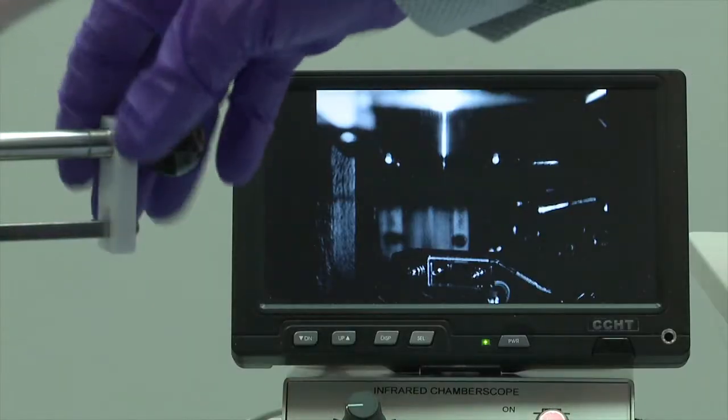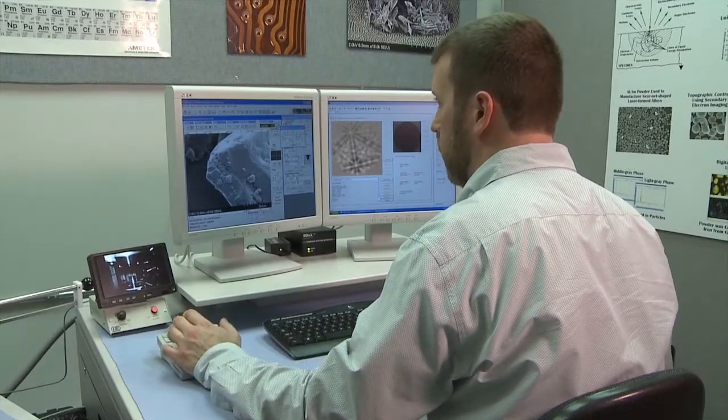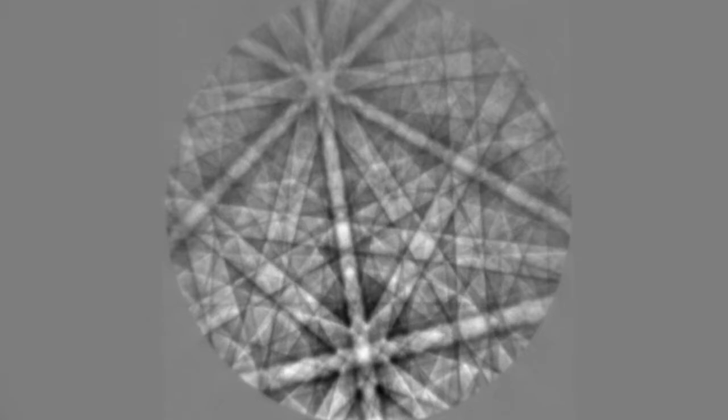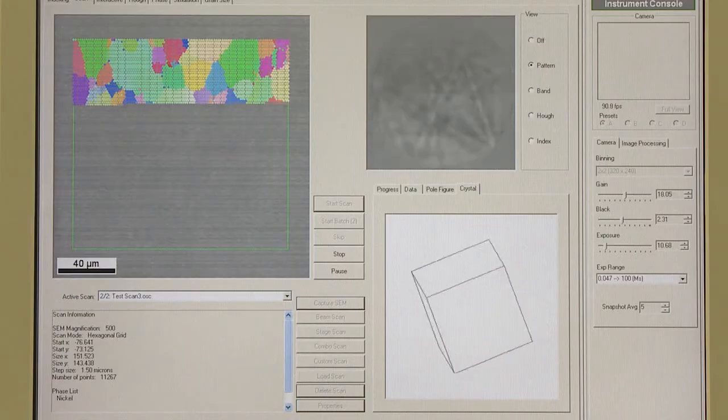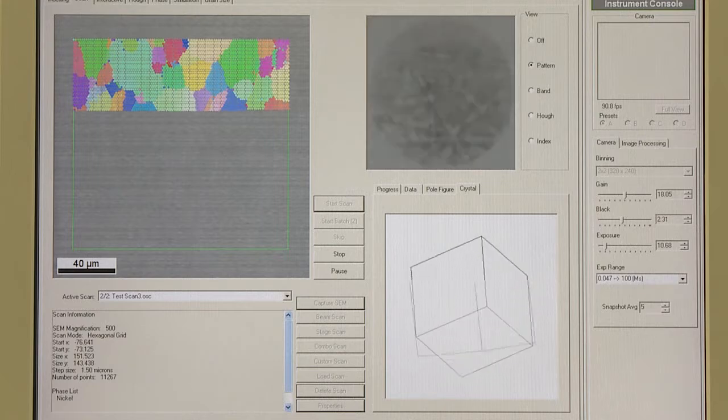Another SEM tool involves the use of electron backscattered diffraction. EBSD provides information about the crystal structure, that is, the arrangement of atoms within a material. This is important because that specific arrangement determines a wide range of material properties, such as strength, toughness, or hardness.